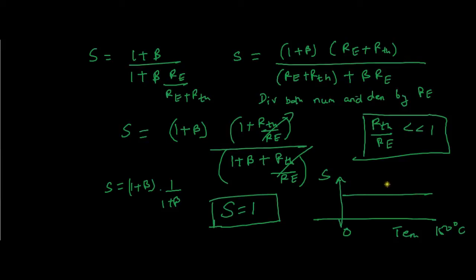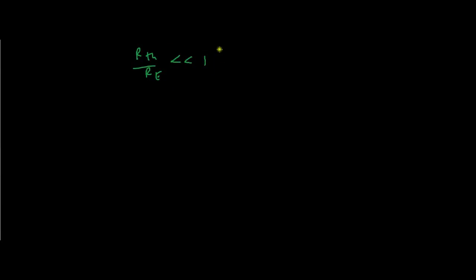It doesn't vary at all. If you build a circuit at 30°C, it will work exactly the same — the operating point will remain the same even if you go up to 150°C. We need to maintain the condition that RTH/RE must be much less than 1. If we maintain this ratio, the stability factor will be approximately equal to 1, which is a fantastic result.